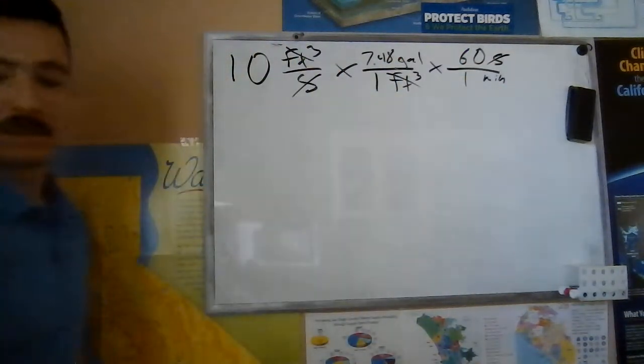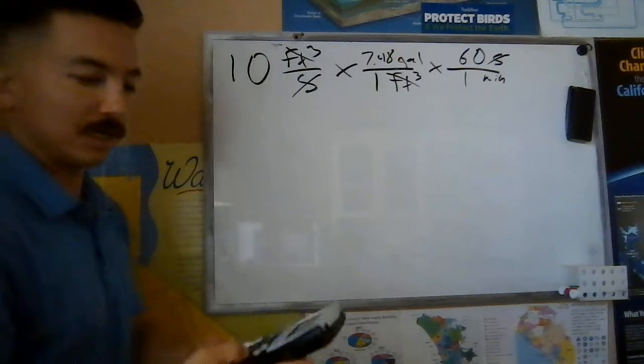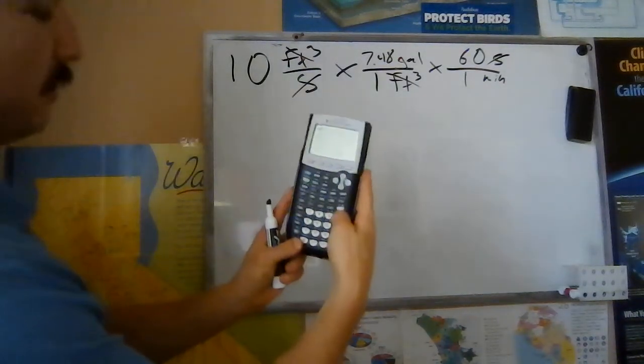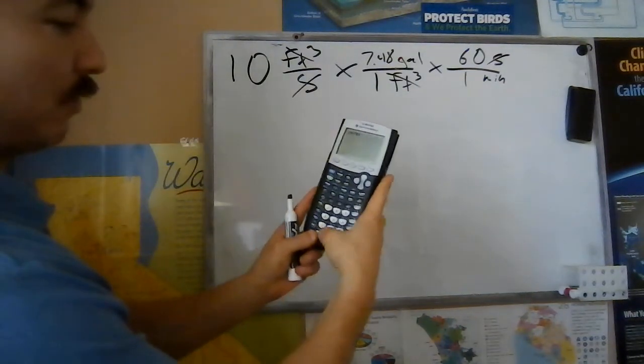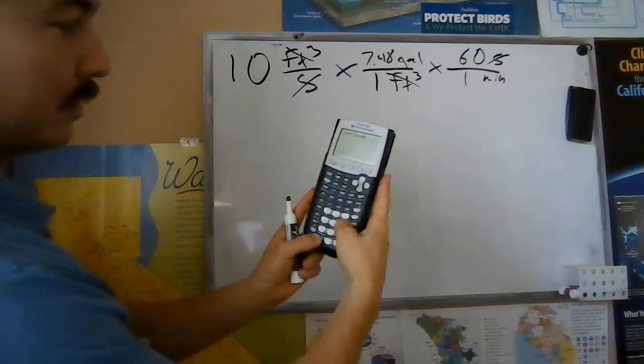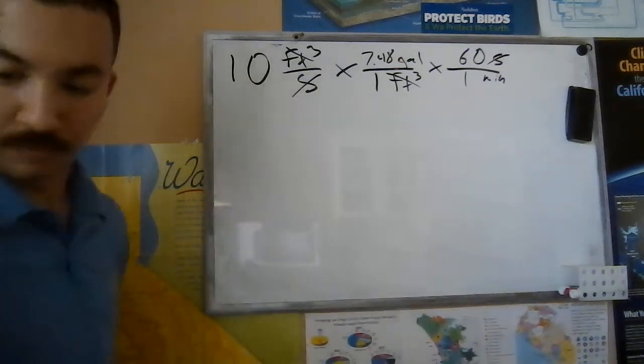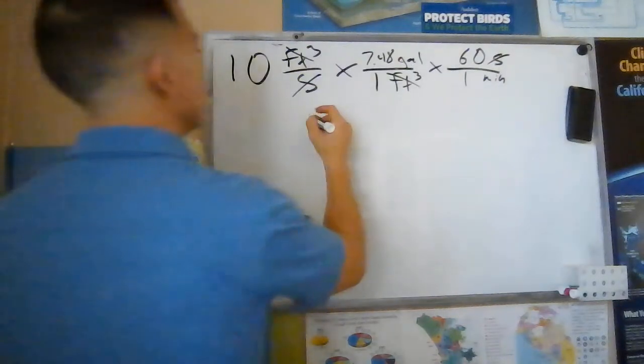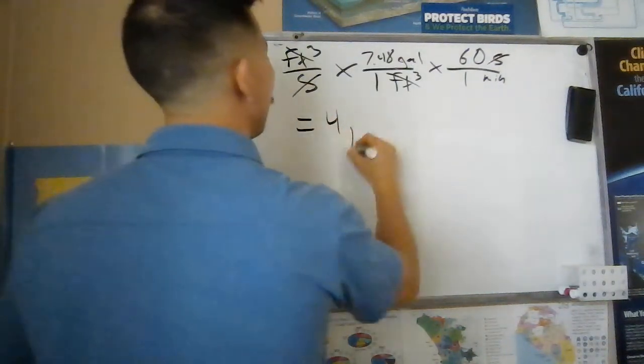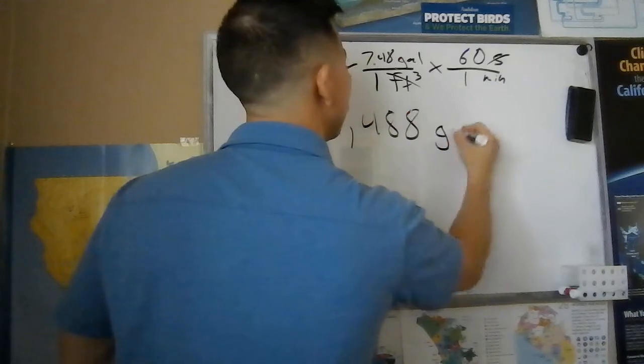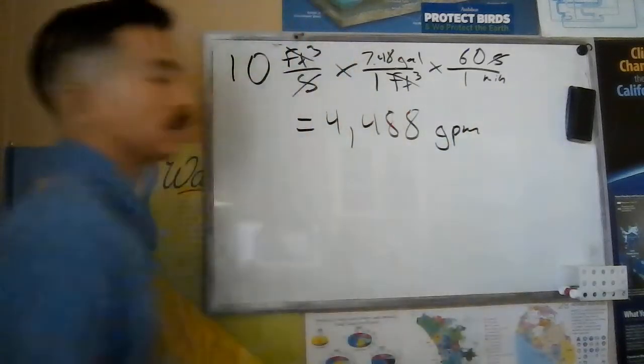We're going to be able to multiply across. I'm going to pull out my handy dandy calculator. I'm going to do 10 times 7.48 times 60 seconds. 4488. So in other words, 4,488 gallons per minute.